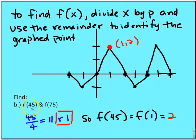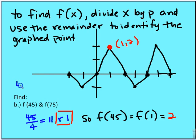To find f of 45, divide x by the period p: 45 divided by 4 gives 11 with remainder 1. Starting at 0, a remainder of 1 corresponds to a y value of 2 on the graph. So f of 1 equals 2, which means f of 45 equals 2. The coordinate point is (45, 2).